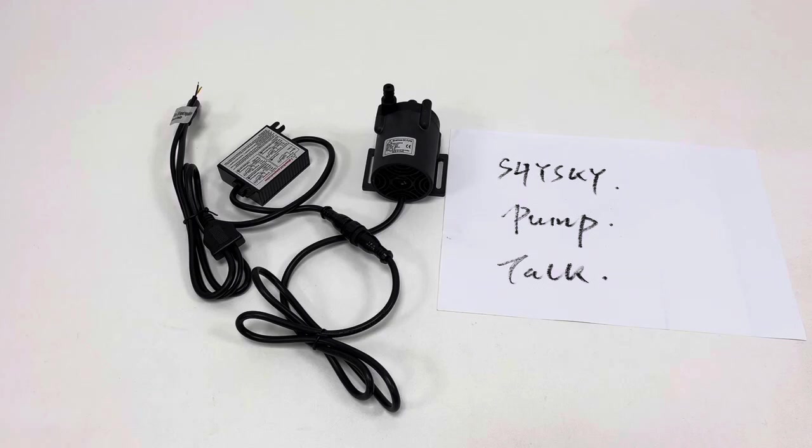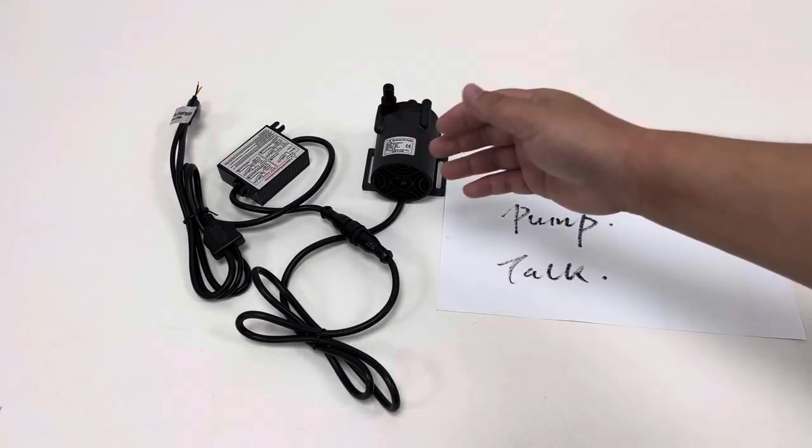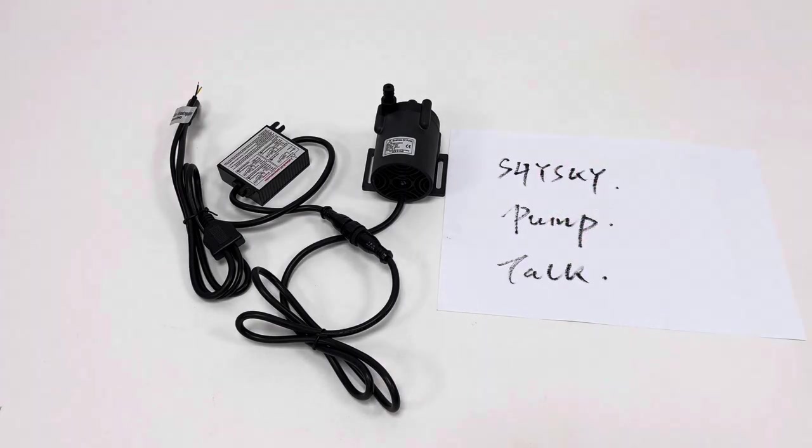In this video I will specially introduce a customized micro-brushless DC pressure water pump among our series with support 0 to 5 volts analog signal control to control the power and flow of this pump. Actually this pump is customized for a domestic user for a specific circulation system.